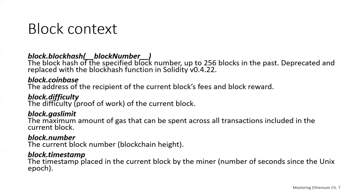The block context: the block object contains information describing the current block. Block hash returns the block hash of a specified block number up to 256 blocks in the past, later replaced with the blockhash() function. Block coinbase is the address of the recipient of the current block's fees and block reward. Block difficulty is the proof-of-work difficulty of the current block. Block gas limit is the maximum amount of gas that can be spent across all transactions in the current block. Block number is the current block number by blockchain height, and block timestamp is placed in the current block by the miner — just like in Bitcoin, you can't really rely on it, but it gives you an approximate time.